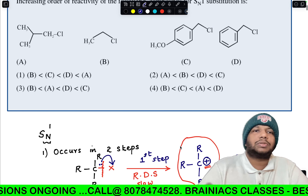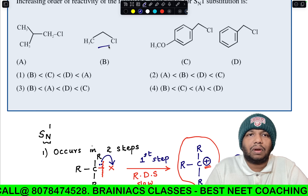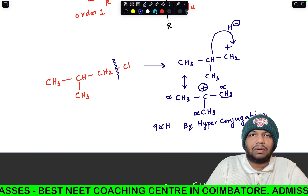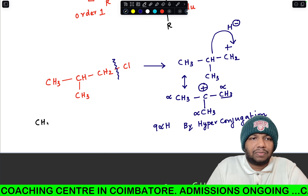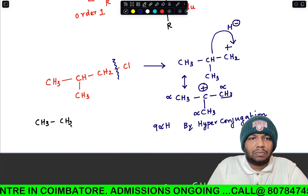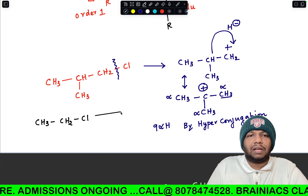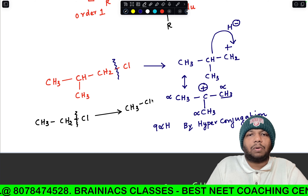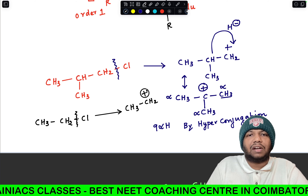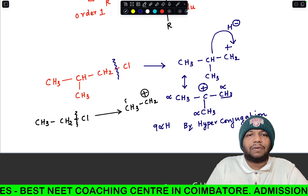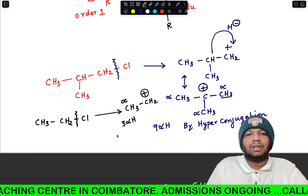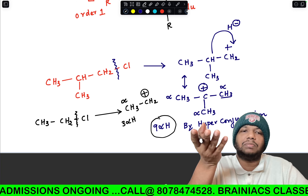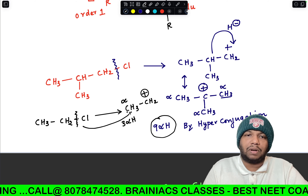For option B — CH₃CH₂Cl — breaking the C–Cl bond gives a primary carbocation with only three alpha hydrogens. As the number of alpha hydrogens increases, stability by hyperconjugation increases. Since this compound has very few alpha hydrogens, this carbocation is highly unstable and will not form quickly.